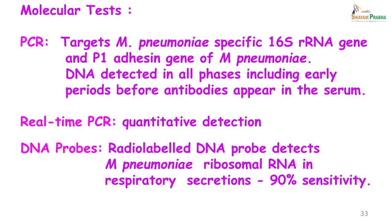Molecular tests like PCR, real-time PCR and DNA probes are nowadays being used; however, their use is restricted to reference laboratories. The advantage of the PCR test is that it will detect the presence of the organism even before antibodies have started appearing in the patient's sample. The DNA probes detect M. pneumoniae ribosomal RNA and show a 90 percent sensitivity.